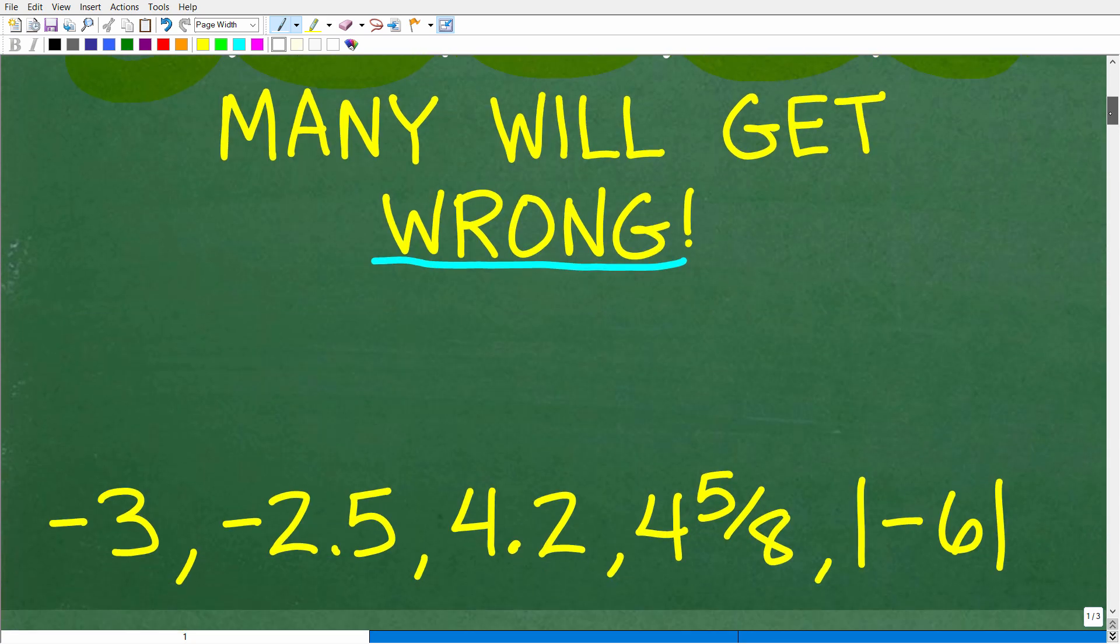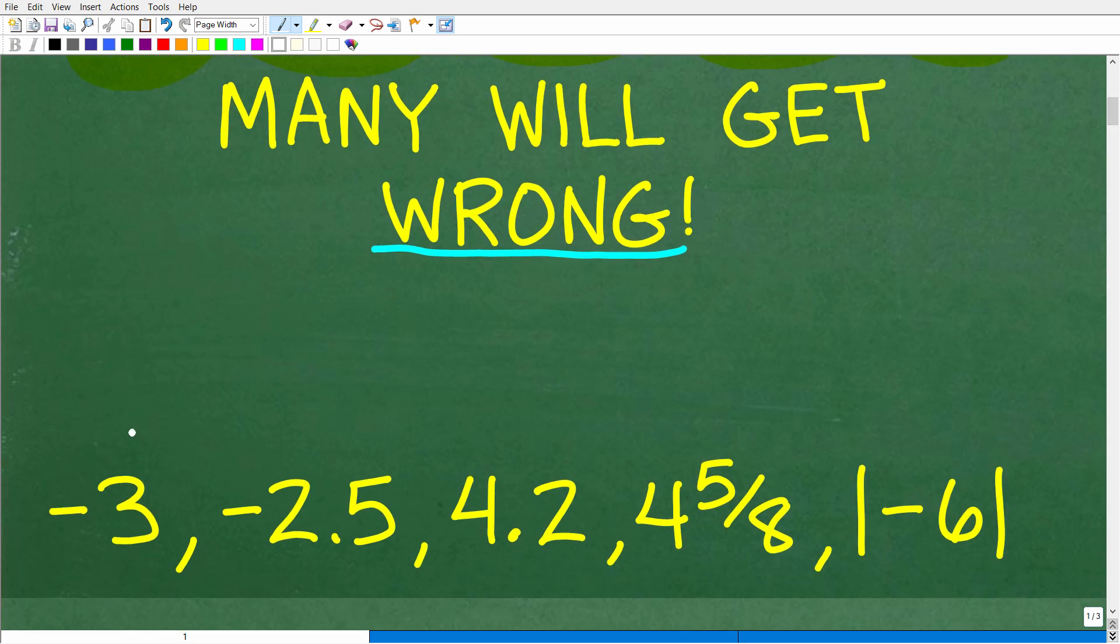The correct answer is the following. So from least to greatest, again, numbers are increasing this way. Our smallest number here is negative 3, and our largest number here is absolute value of negative 6. So we have negative 3, negative 2.5, 4.2, 4 and 5 eighths, and the absolute value of negative 6.